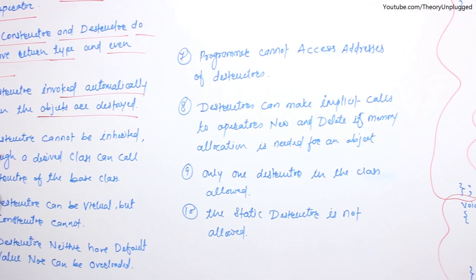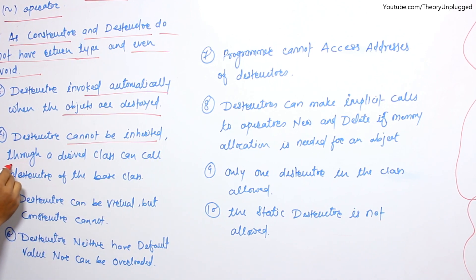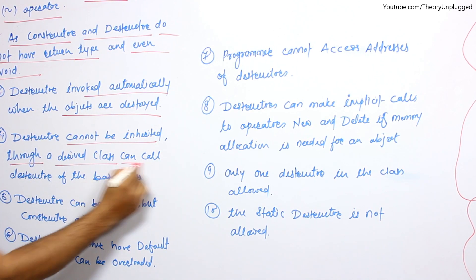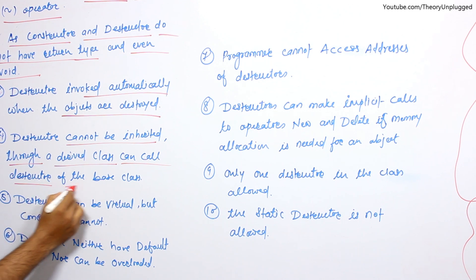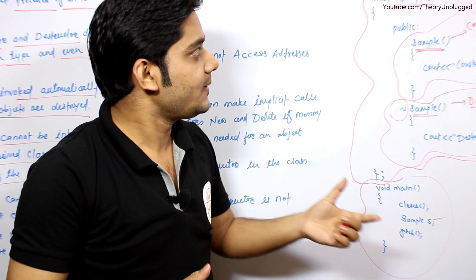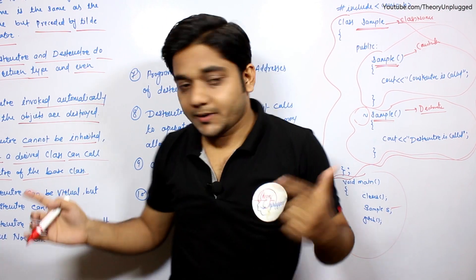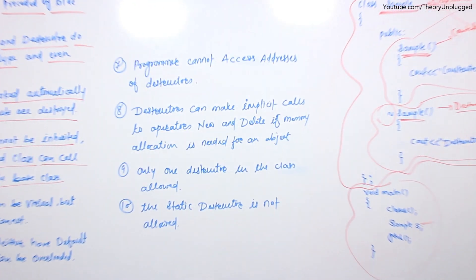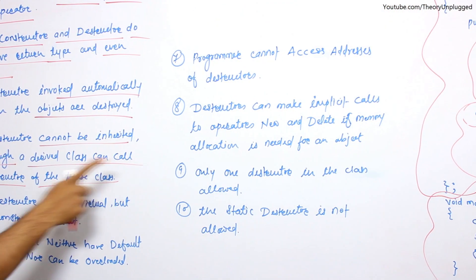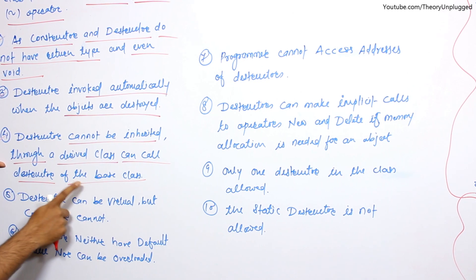Fourth point: destructor cannot be inherited, though a derived class can call destructor of the base class. Here we have a simple example. We haven't taken inheritance example here, but the point is destructor cannot be inherited, though a derived class can call destructor of the base class.